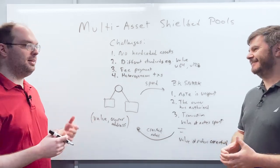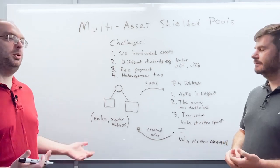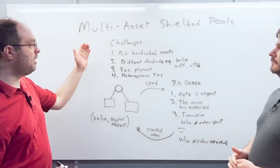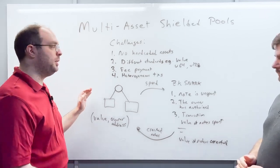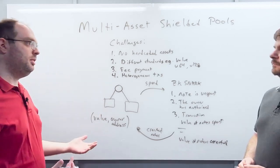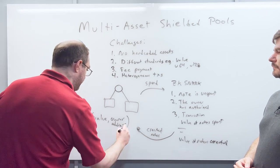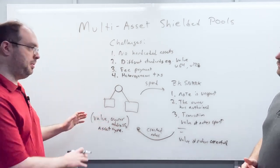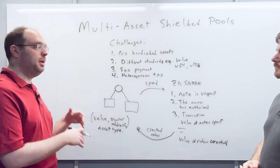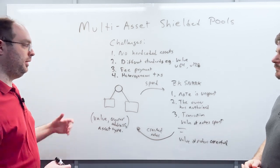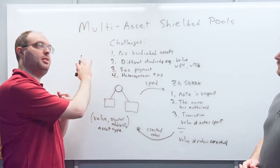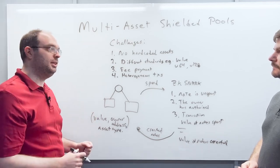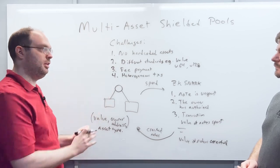With a multi-asset shielded pool, questions about multiple signers arise that don't come up in a single-asset pool. We can start from the single-asset model and address these challenges. The most simple thing we can do is add another field to each note: asset type. Whether assets are ERC tokens, Cosmos tokens, or something else, they all have some representation for their asset type that we encode and put in the note.